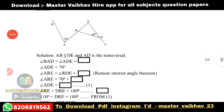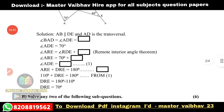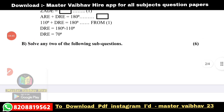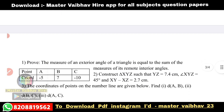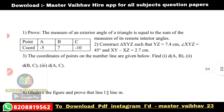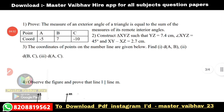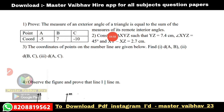Look at the activity and try to solve it. Now attempt any two of the following sub-questions. First: prove that the measure of the exterior angle of a triangle is equal to the sum of the measures of its two remote interior angles.